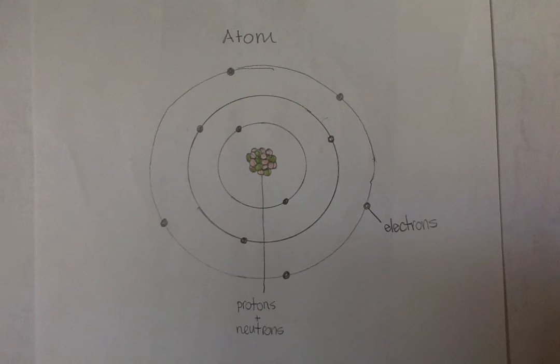The octet rule. The octet rule states that atoms always end up with eight electrons in their outermost energy level.